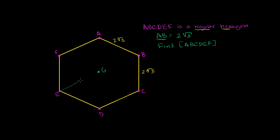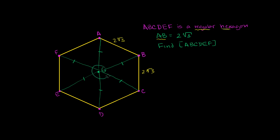Let me draw some of those lines: GE, GD, GC — all these lengths are the same. There's a point G, the center of the polygon, and we know all six of those distances are equal. We also know that all these triangles are congruent to each other. They each have two equal sides because G is the center, and they all share a third common side of two square roots of three. So by side-side-side, they are all congruent.